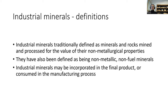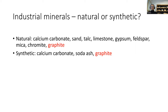So coal and anthracite would be fuel minerals effectively, but not being used for fuel in that case. Industrial minerals may be incorporated in the final product or consumed in the manufacturing process. Natural examples include calcium carbonate, sand, construction aggregate, limestone, and of course graphite, which is the topic of this talk.